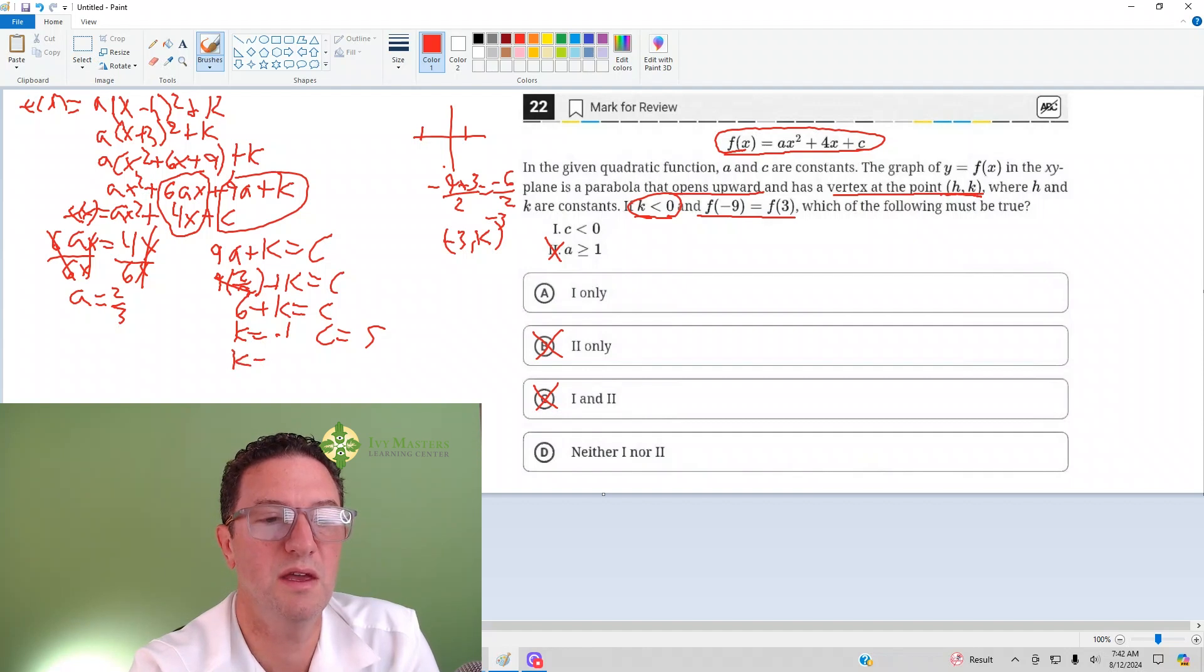So does c have to be less than zero? This is everything I could do for this question. If c is 5 or c is 4, then it is not less than zero, so I'd have to say Roman numeral I is false as well, and D is my correct answer.